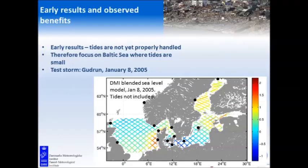These are some early results of the assimilation. For these early results we do not have proper handling of tides, so we focus on the Baltic Sea and a storm in 2005 that was really bad in the Danish area and also near the Estonian coast. Unfortunately my colleague chose not to include the Tallinn station, which would have been a nice example — maybe we will add that later for testing.